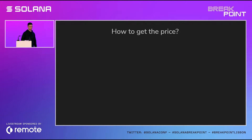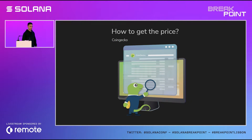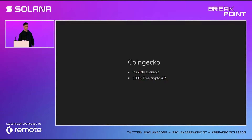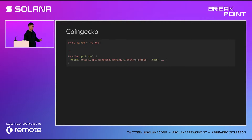The first thing we want to do to build the Solana Explorer is to get the price. One of the most popular and best solutions is to get it from CoinGecko. There are three reasons why CoinGecko is one of the best solutions: first, it's publicly available, meaning you don't need to create an account or token to use it. Second, it's 100% free — you don't pay anything to use those APIs. Third, you have a vast dataset of more than 1,000 coins. You just declare the ID for Solana, fetch the URL, and you get the data.